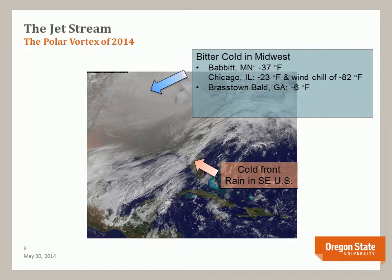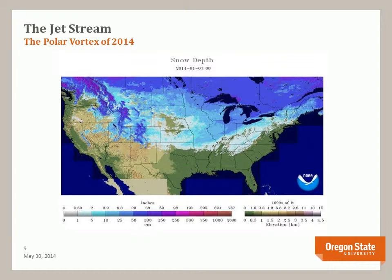This slide is a satellite image during the polar vortex event. Note the location of a cold front that brings rain and clouds to the far southeast United States. In the central U.S., high clouds are associated with bitter cold, with many locations recording historic lows and windchill temperatures — for example, Babbitt, Minnesota at minus 37 degrees Fahrenheit, Chicago, Illinois with a minus 82 degrees windchill, and Georgia locations dipping below zero. Heavy snowfall also occurred along the leading edge of the polar vortex, with significant accumulations as far south as Georgia.